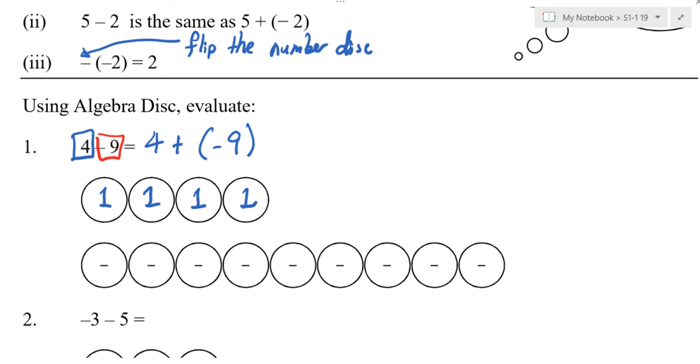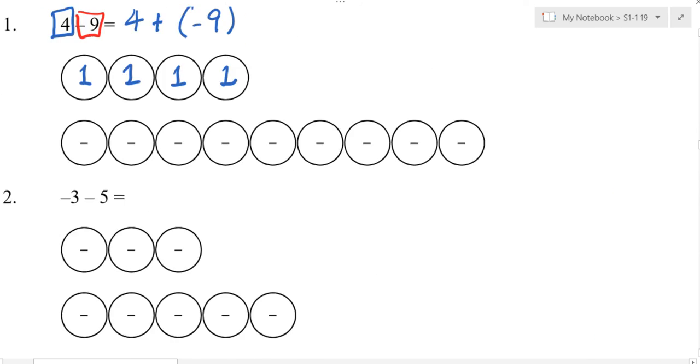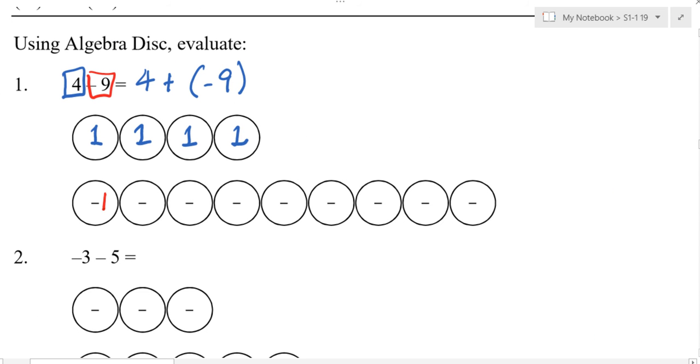I will use red color. This negative 9 means I have negative 1, but how many negative 1 do I have? 9 times. I will have 9 negative 1. Can you follow? Plus means I want to add them together.